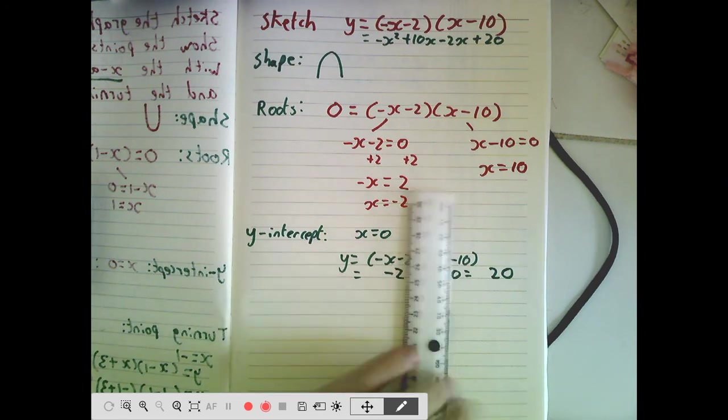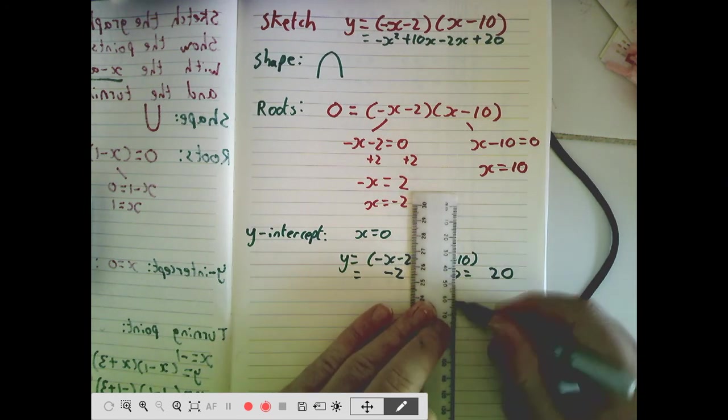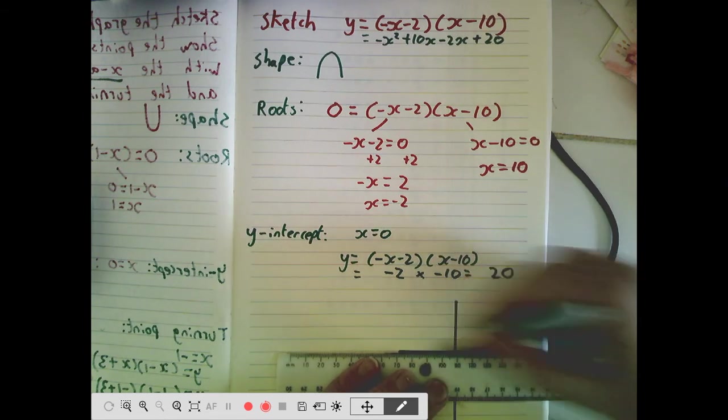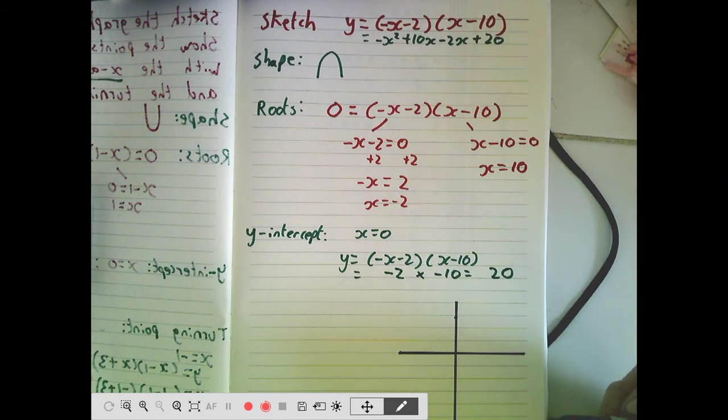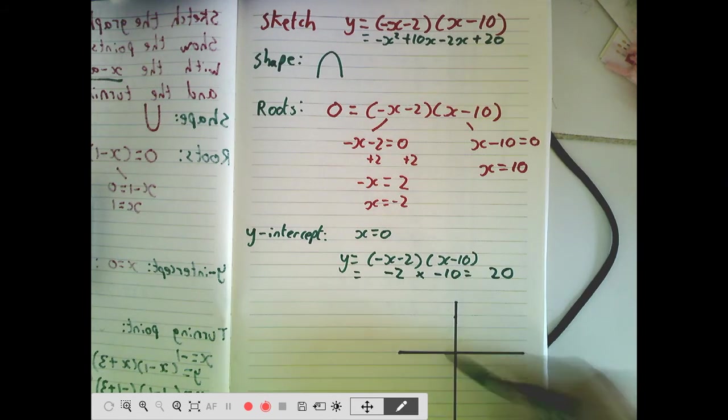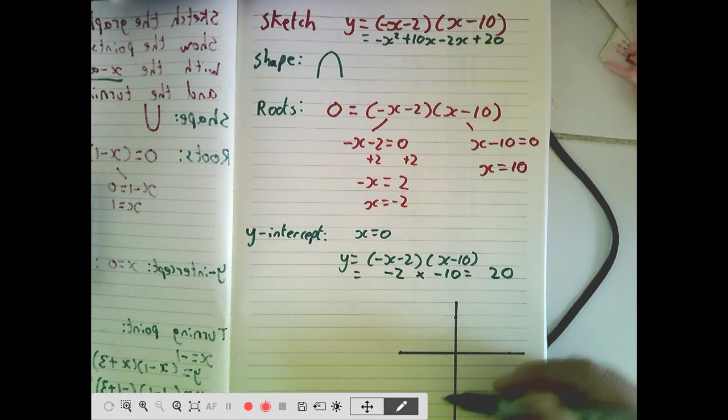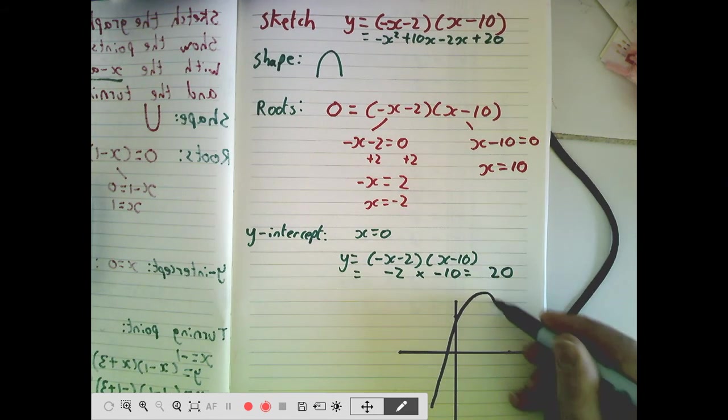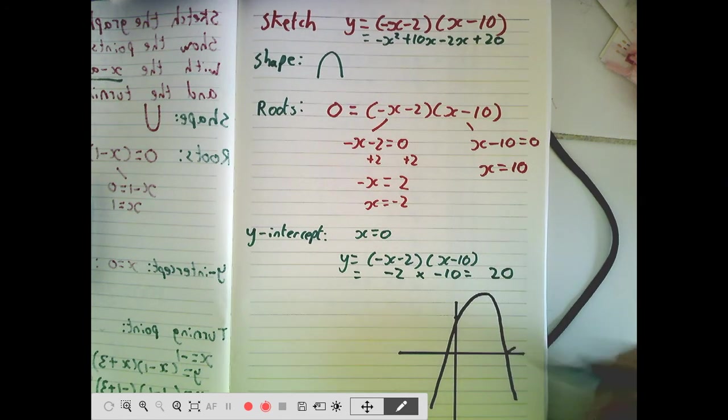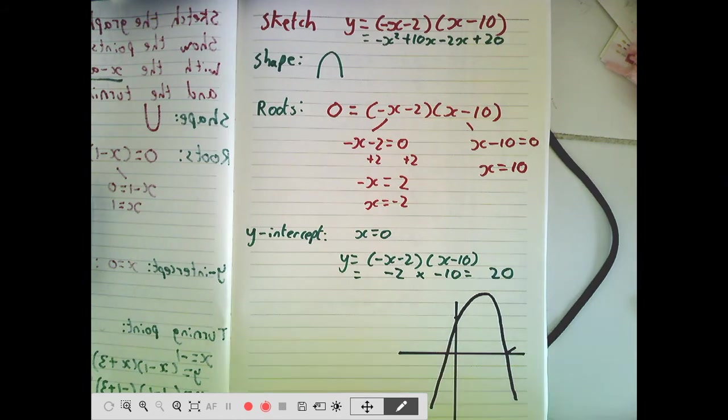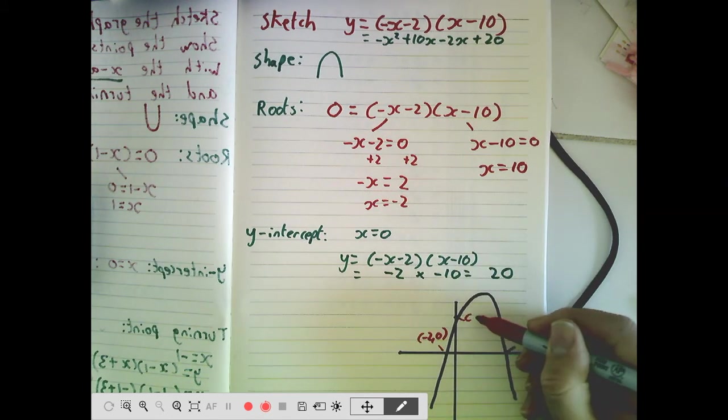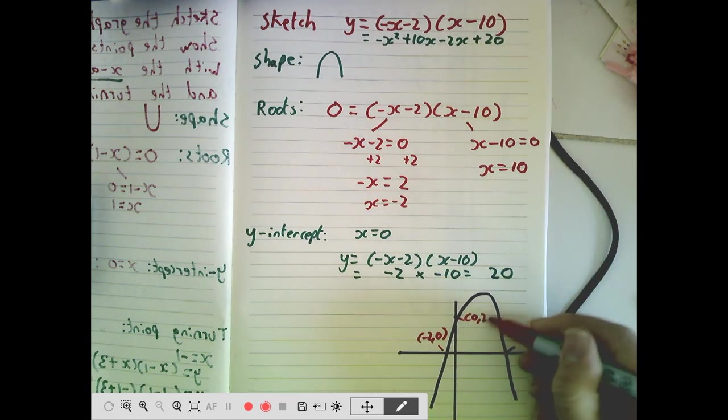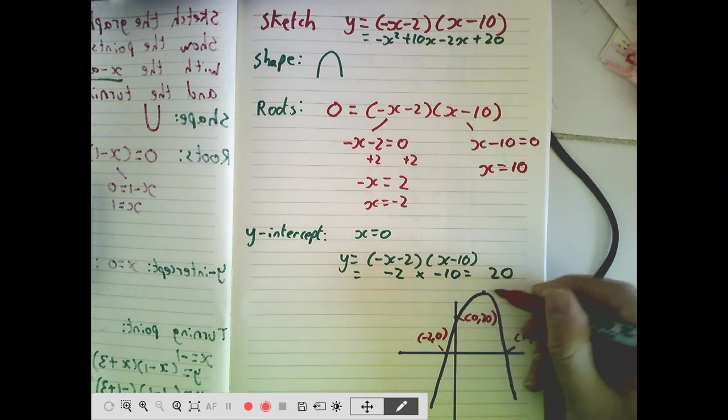So just like last time, I'm going to now sketch the graph at this point, because I think now is a suitable time to do that. So we're going to cross the y-axis at 20. So somewhere up here, we're going to cross the x-axis at minus 2 and at 10. So it's going to look something like this. And we'll just label this point. So this is going to be the point 10, 0. This is going to be the point negative 2, 0. And this is going to be the point 0, 20. And so all that remains is to find the turning point.